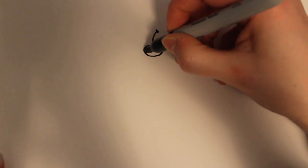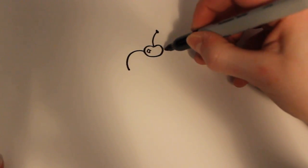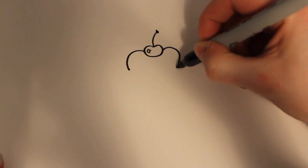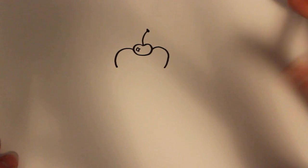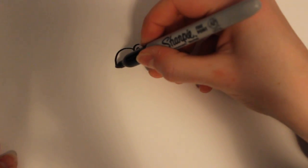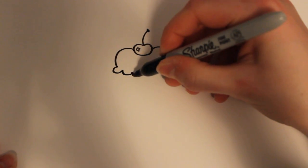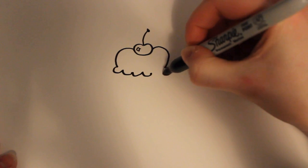And then for the cupcake part I'm just going to make two curves on the outside of that, which is the frosting part. Right from there. And then I'm going to make my little curves as the frosting detail.